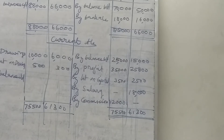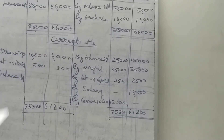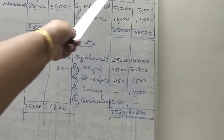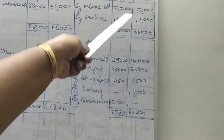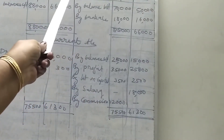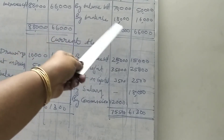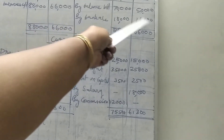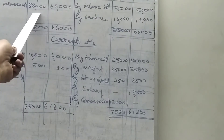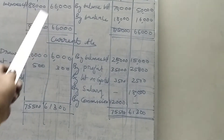First we want to prepare the capital account, then the current account. In the capital account, there are 2 partners — Ruben as well as Derry — on both sides. Both capital accounts are prepared in a single account, so there are 2 amount columns for Ruben and Derry on each side.